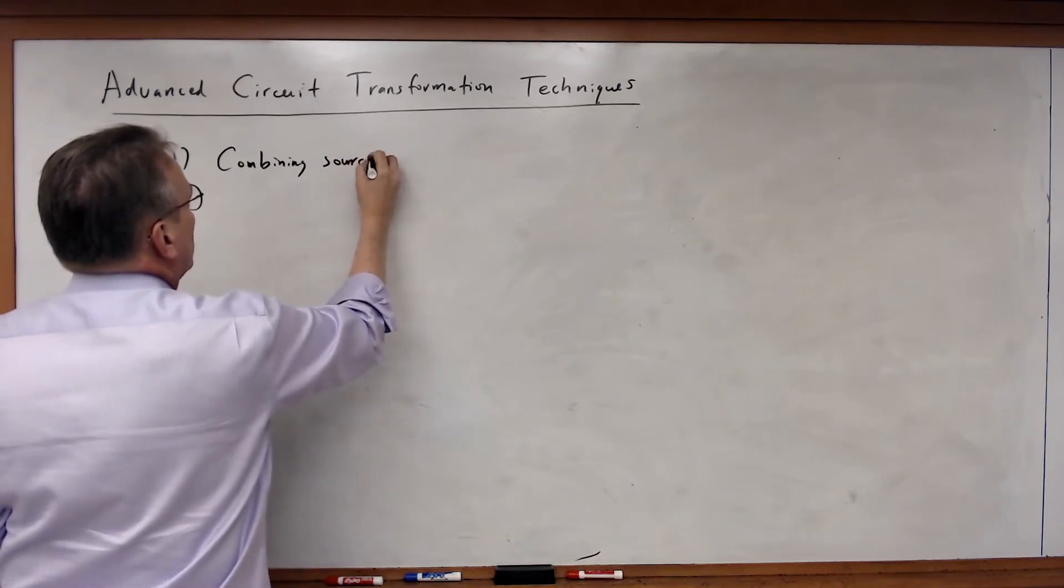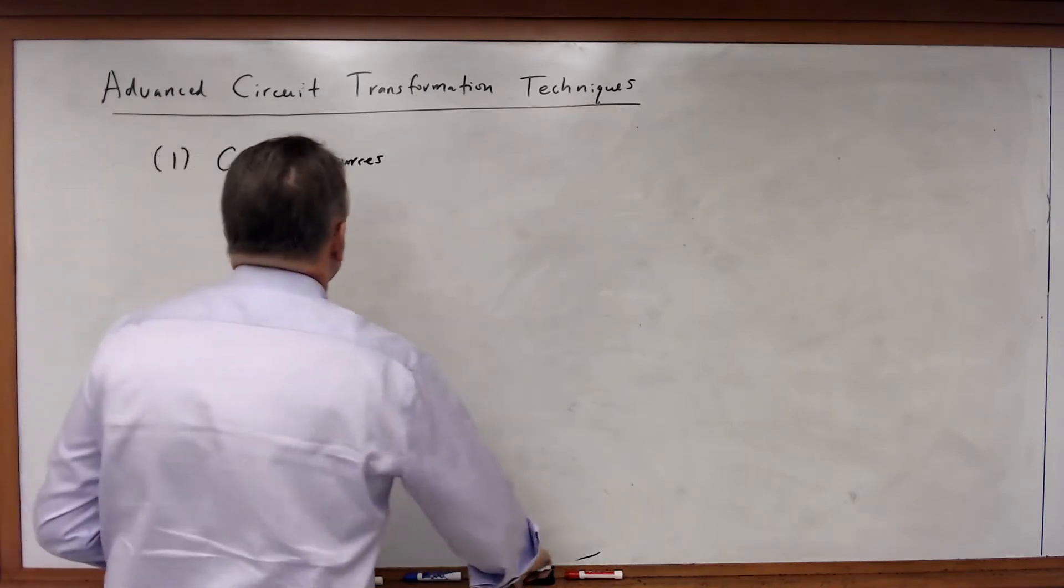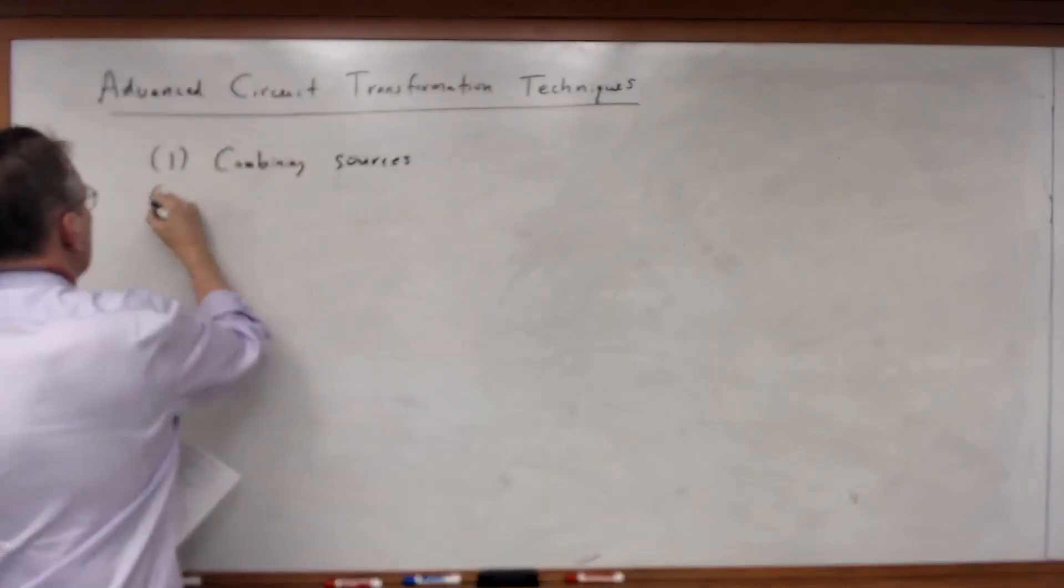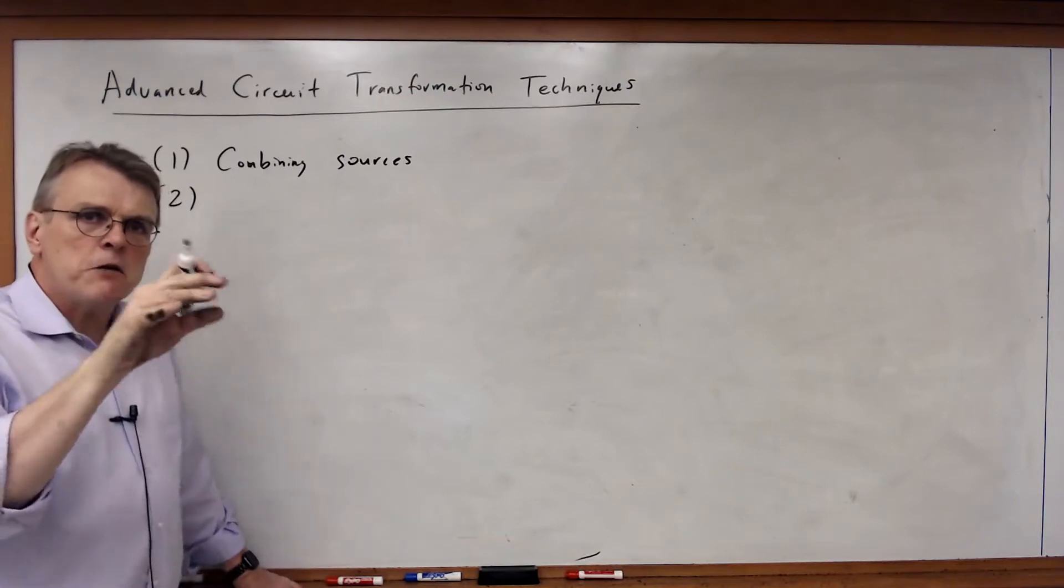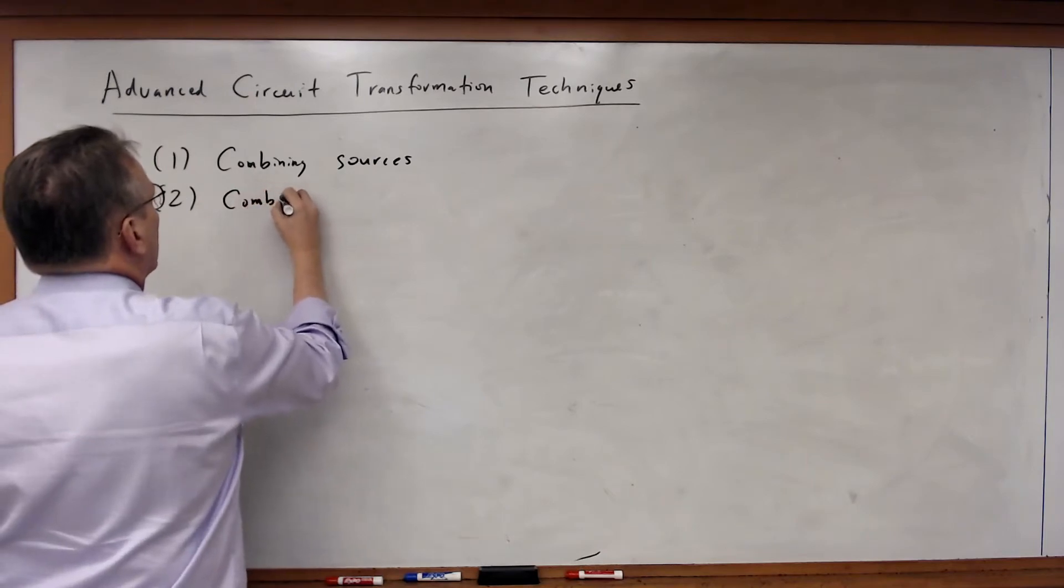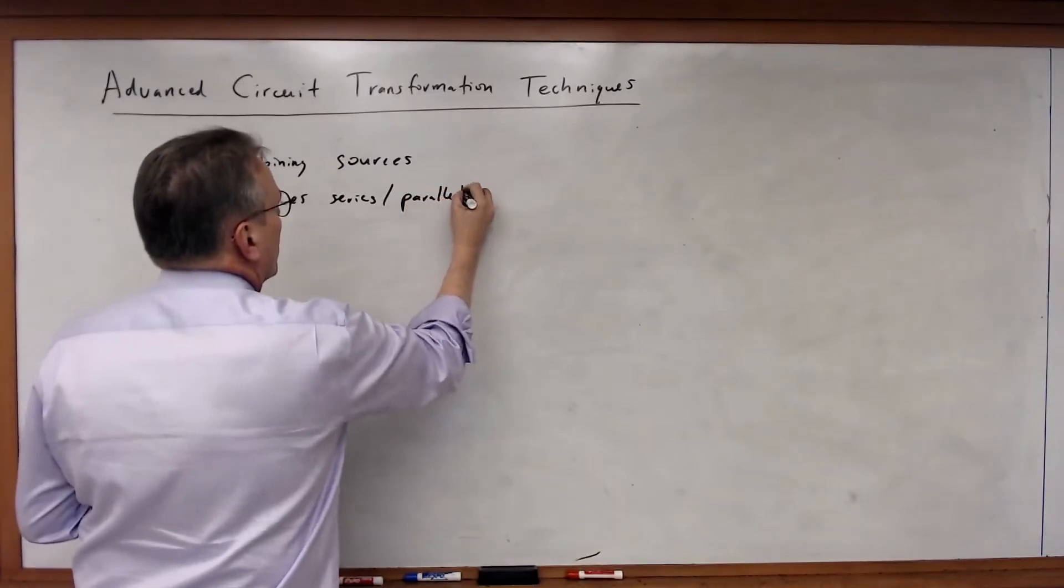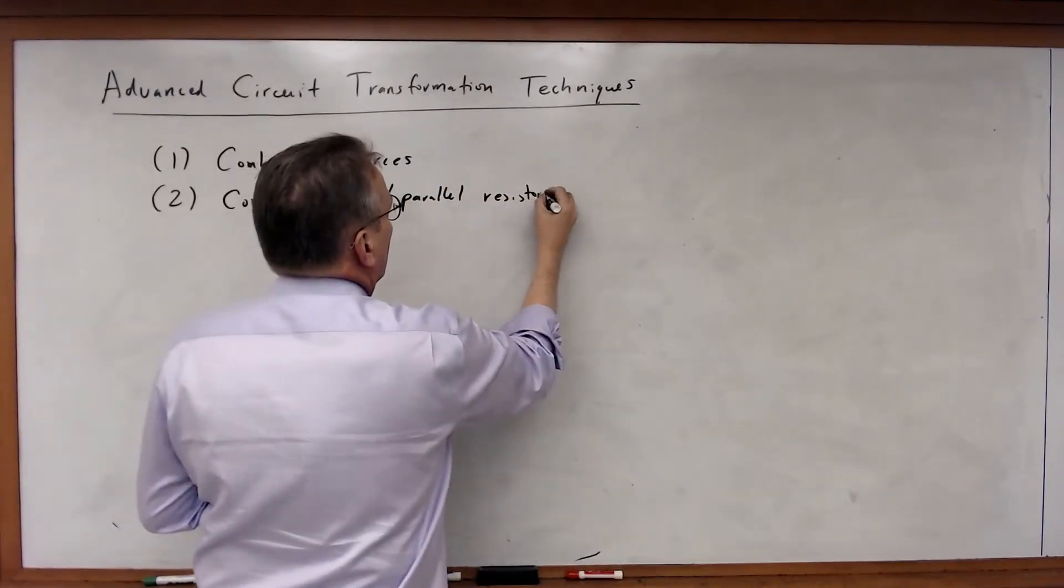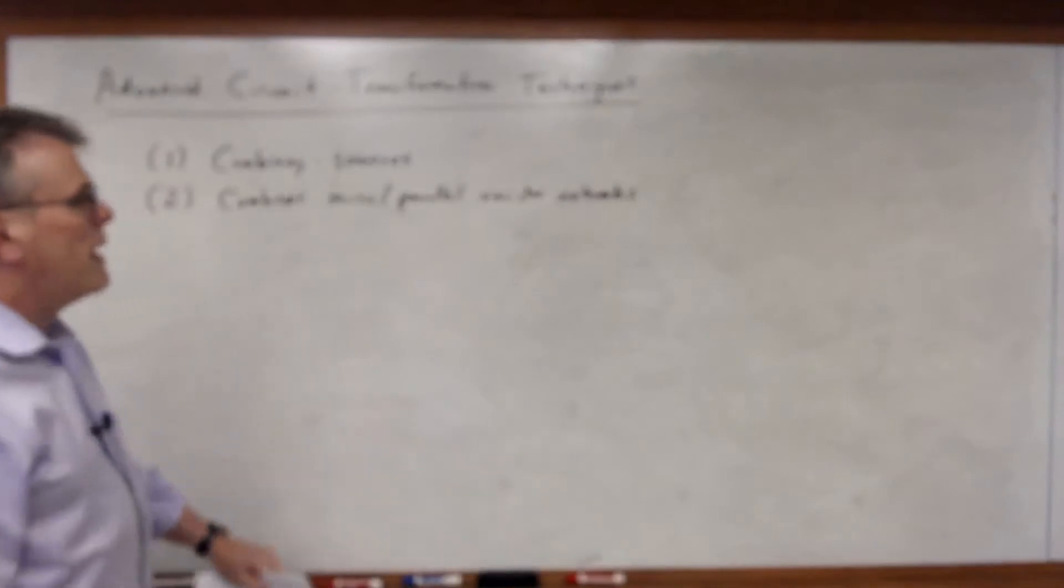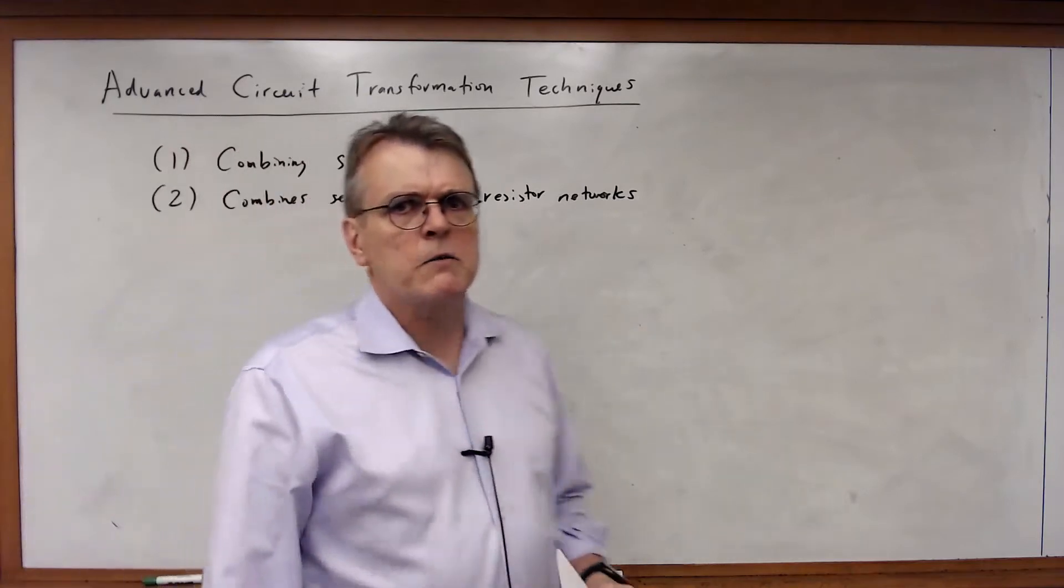For example, we saw how voltage sources in series and current sources in parallel, we could add those together to create a single source. We also saw how to combine series parallel combinations of resistors. We saw how we could go through and combine those together and make a single equivalent resistor. So we've already learned how to do some very simple kinds of transformations.